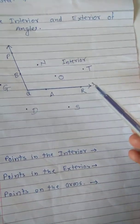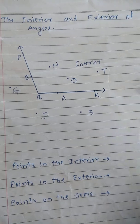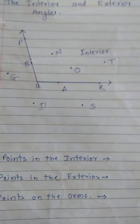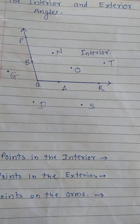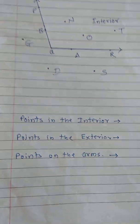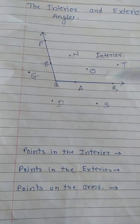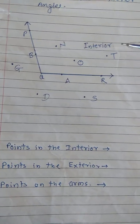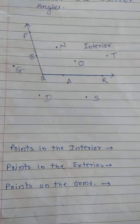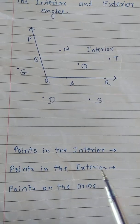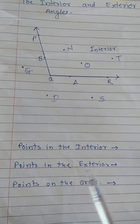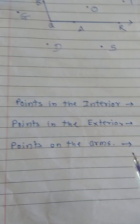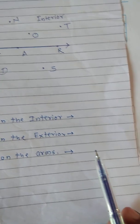Now, the points on the arms — questions are as follows. A diagram or figure is given and you have to observe that figure and write the points in the interior, the points in the exterior, and the points on the arms of that particular angle.